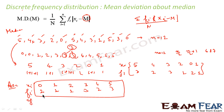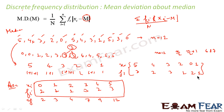Cumulative frequency gives a better idea of exactly where each term falls. The cumulative frequencies are: 2, 2+1=3, 3+1=4, 4+3=7, 7+2=9, 9+3=12. Cumulative frequency is obtained by adding all frequencies up to that point. Since we need the 6th and 7th terms, we check where they fall.